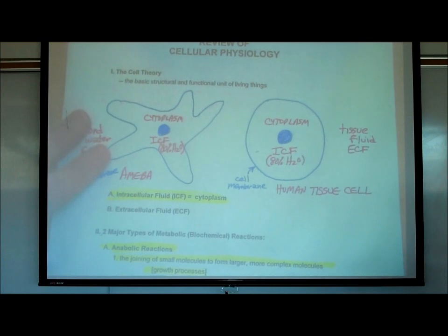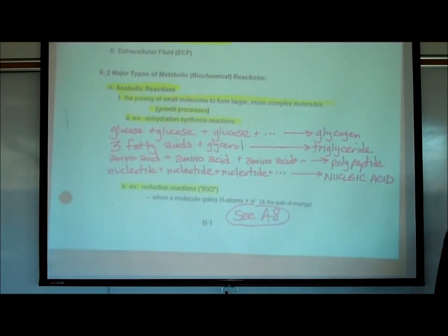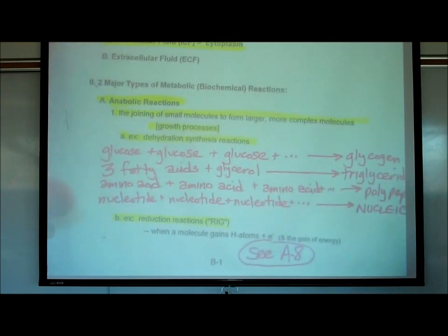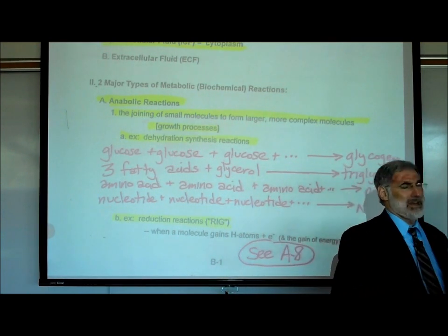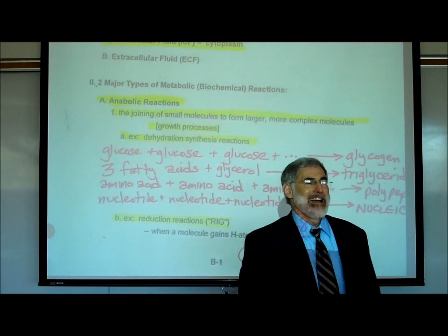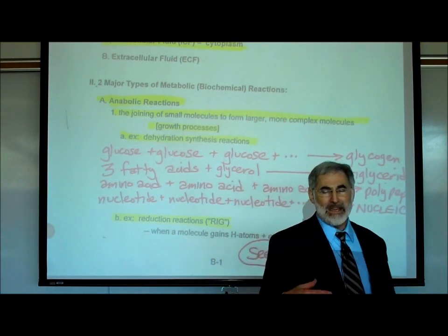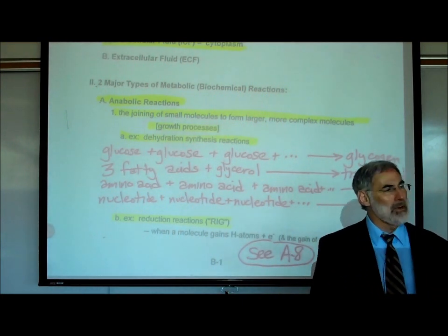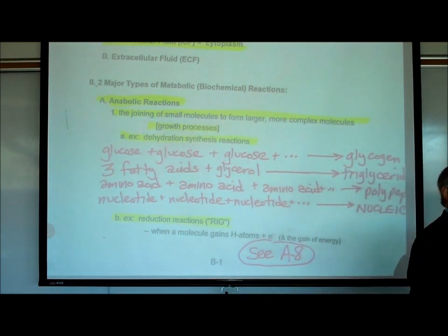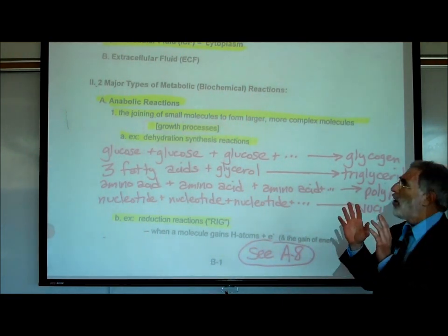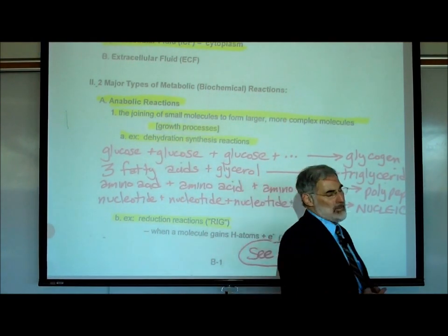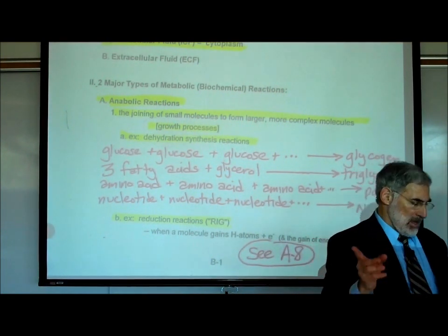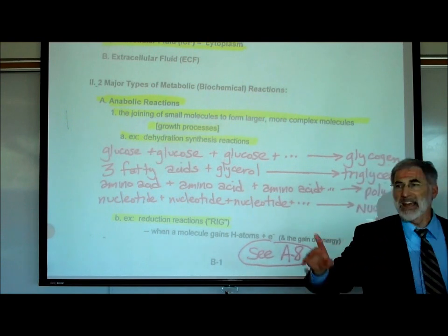Our main focus today is metabolism. The word metabolism means biochemical — or metabolic — reactions. People sometimes say 'I think I've got a slow metabolism,' making a comment about the speed of biochemical reactions in their body. All living things have two categories of biochemical reactions: anabolic and catabolic. Let me give you the big picture of this and then we'll look at the details.